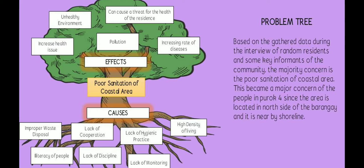Based on gathered data from interviews with random residents and key informants, the majority concern is poor sanitation of a coastal area. This became a major concern of the people in Puruk 4 since the area is located on the north side of the barangay near the shoreline. The problem tree is divided into three parts: the roots, the trunk, and the branches. At the center is the issue of poor sanitation of a coastal area, while the roots show the factors why this problem exists.